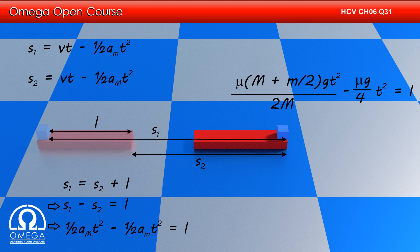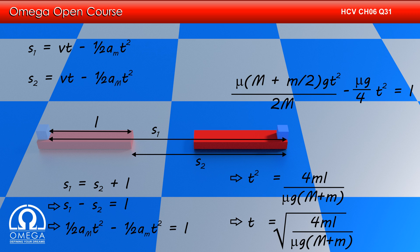Putting the values, we get μ(M + m)g/(4M) · T² − μg/4 · T² = L. Simplifying, we get T² = 4ML / [μg(M + m)], or T = √(4ML / [μg(M + m)]).